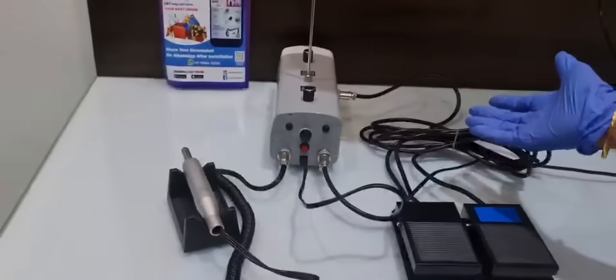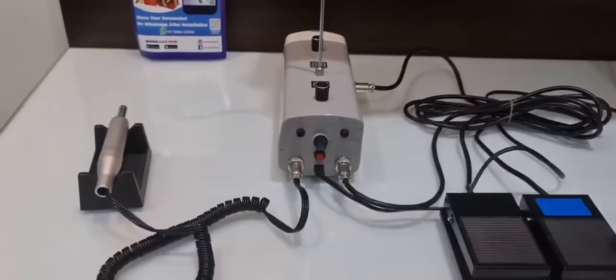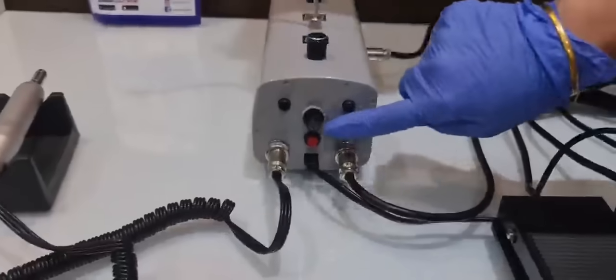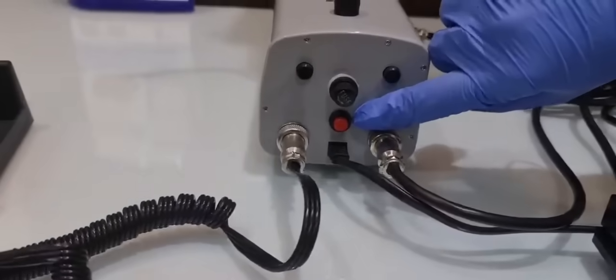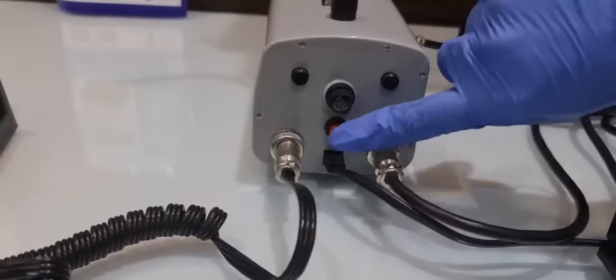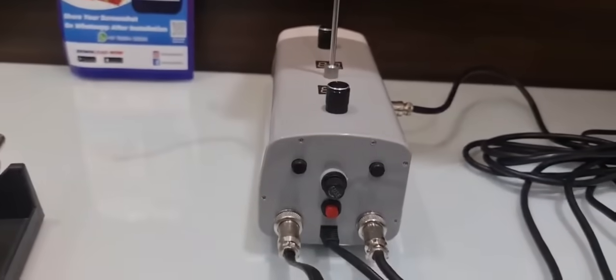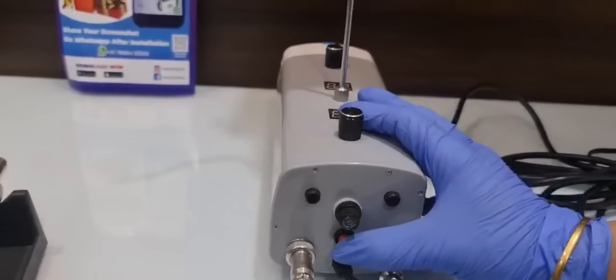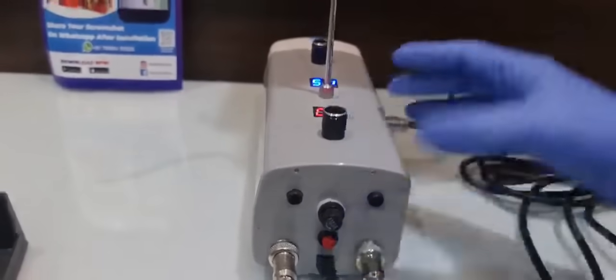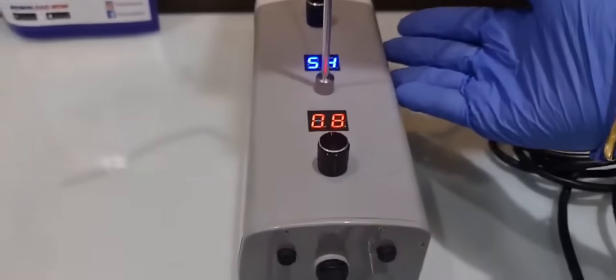Now let's see the functioning of this motor. There is a red button over here which is used for power on and off. Let's switch it on from the back first, then you may press it. Now you can see that the motor has started to work.